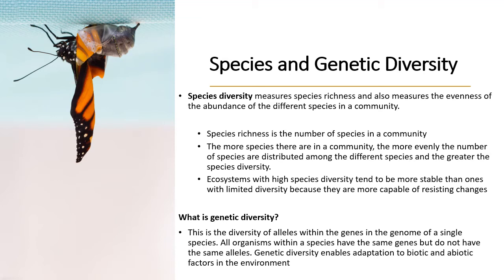If we use the rabbit example from chapter 17, if we think about the fact that we spoke about only brown and white rabbits, what if we had rabbits that were shades in between? That definitely increases the species richness of the area and might result in the rabbit population surviving better if they are being hunted by predators. It's not the perfect example, but I hope it helps you understand what is being communicated.